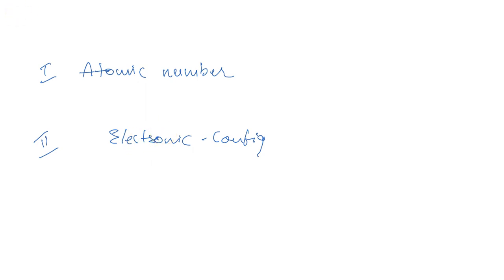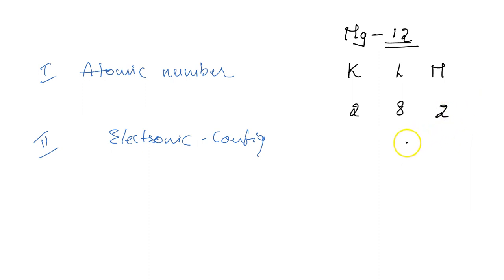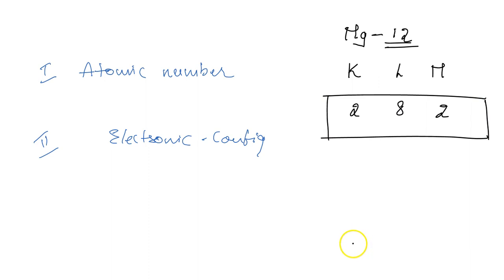Let us take one element as an example. We are talking about magnesium, whose atomic number is 12. With the help of this atomic number, let us write the electronic configuration according to shells K, L, M. The capacity of the first shell is 2 and the second shell is 8, and after filling the first two shells we are left with 2 electrons which go into the third shell. So the electronic configuration is 2, 8, 2.